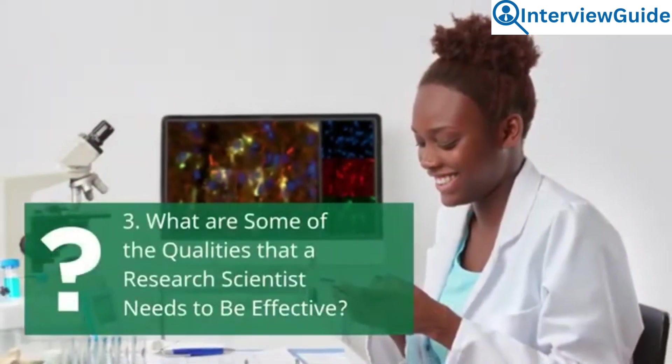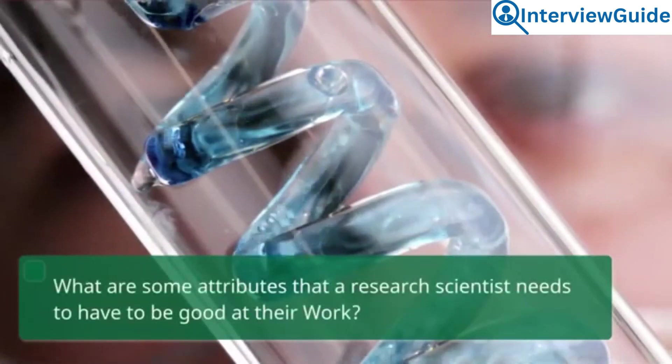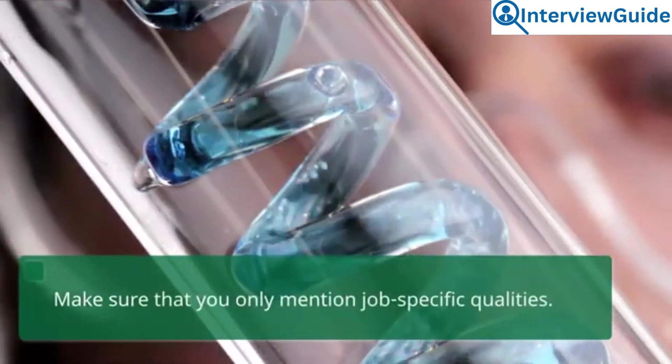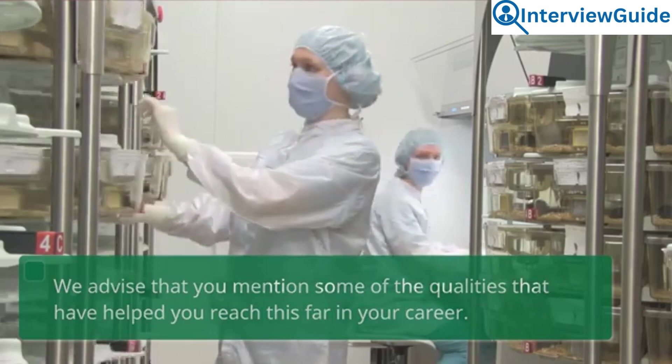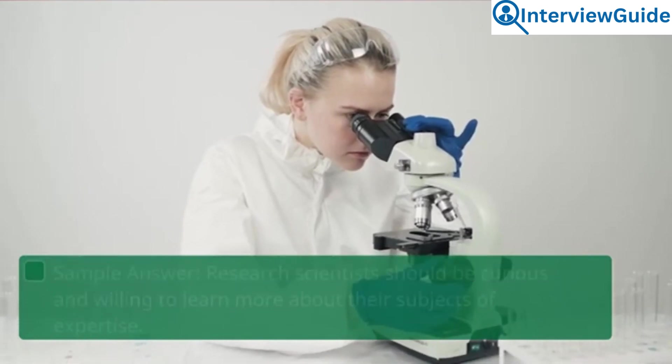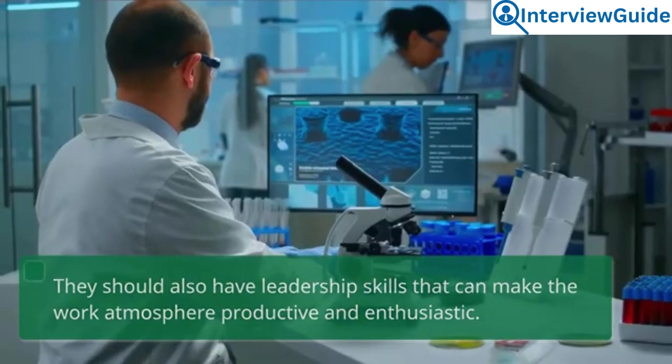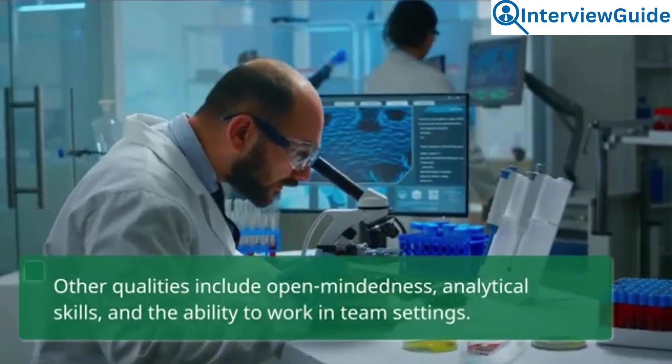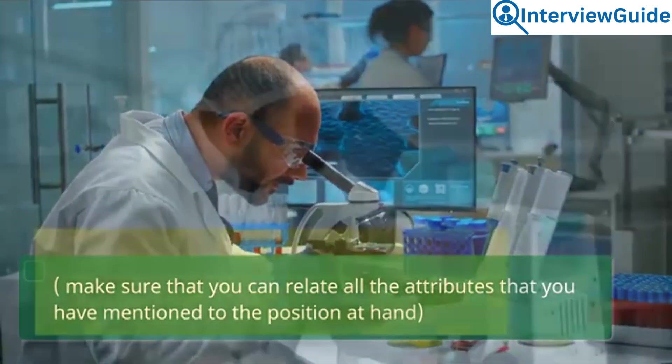Question 3: What are some of the qualities that a research scientist needs to be effective? What are some attributes that a research scientist needs to have to be good at their work? Make sure that you only mention job-specific qualities. We advise that you mention some of the qualities that have helped you reach this far in your career. Sample answer: Research scientists should be curious and willing to learn more about their subjects of expertise. They should also have leadership skills that can make the work atmosphere productive and enthusiastic. Other qualities include open-mindedness, analytical skills, and the ability to work in team settings. Make sure that you can relate all the attributes that you have mentioned to the position at hand.